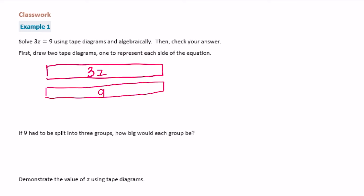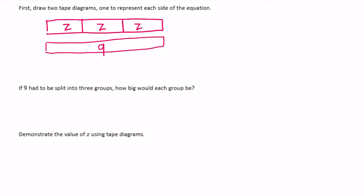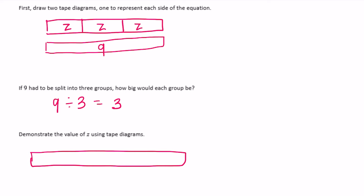Instead of writing 3z as one block, we can separate it into three different z's. So we have 3z is equal to 9. If 9 had to be split into three groups, how big would each group be? 9 split into three groups — each group would be 3. So each section is z, and z is equal to 3.